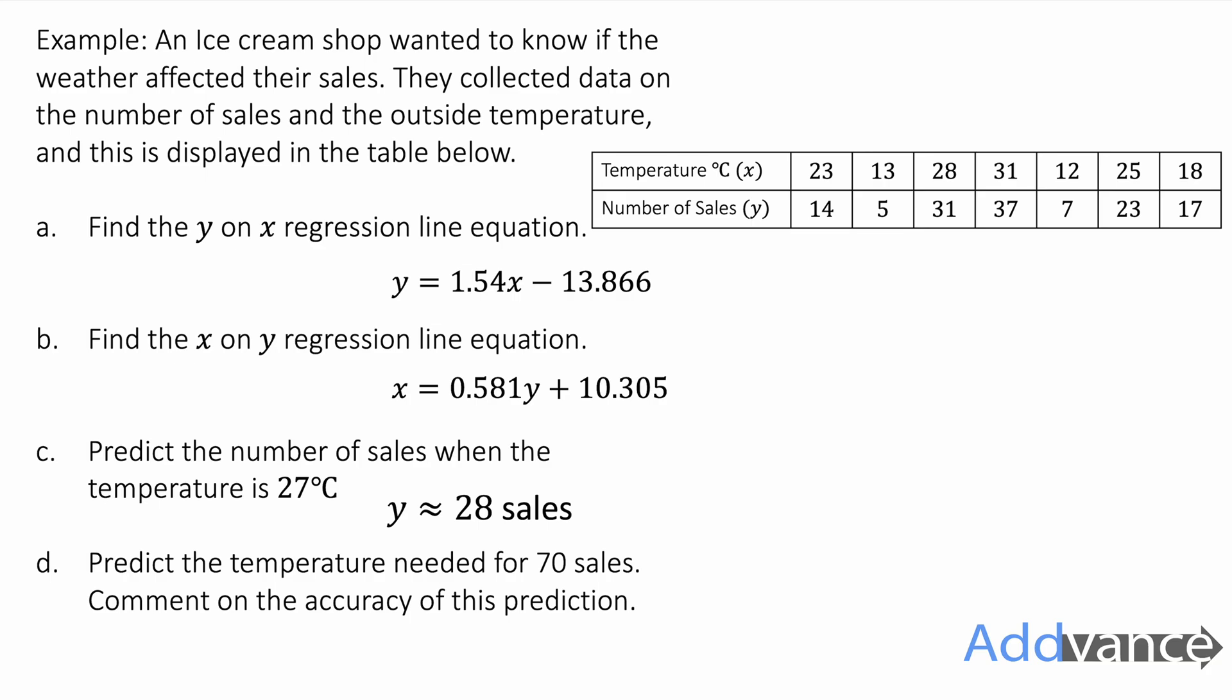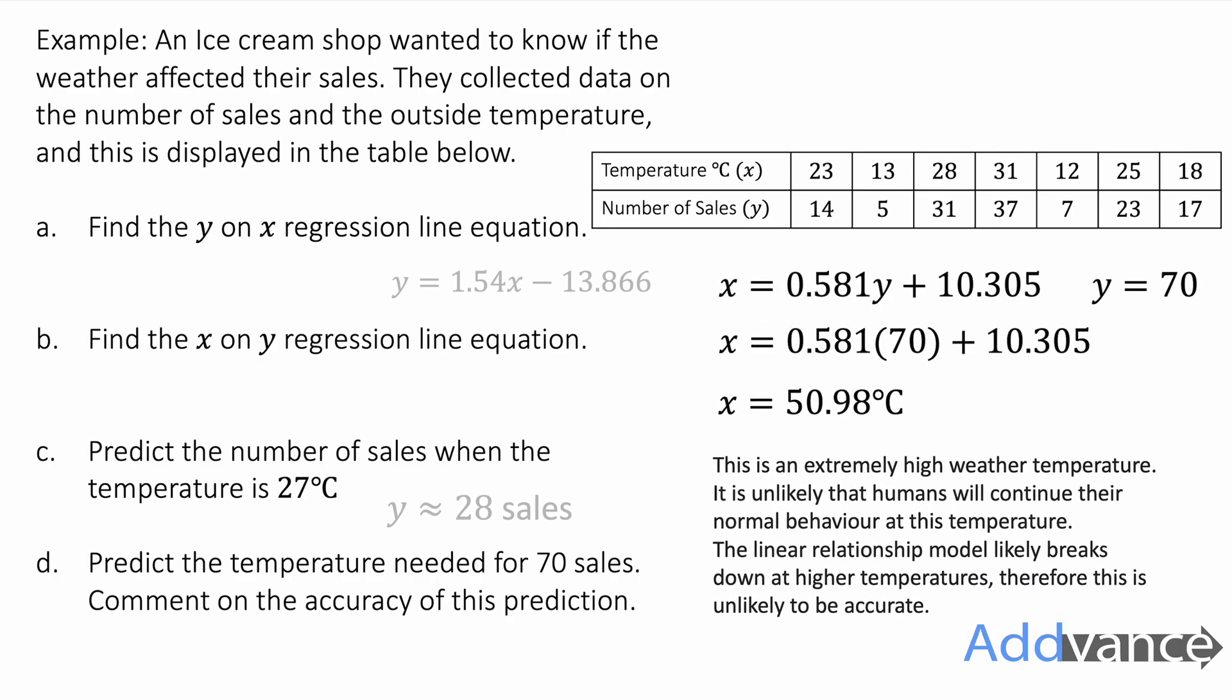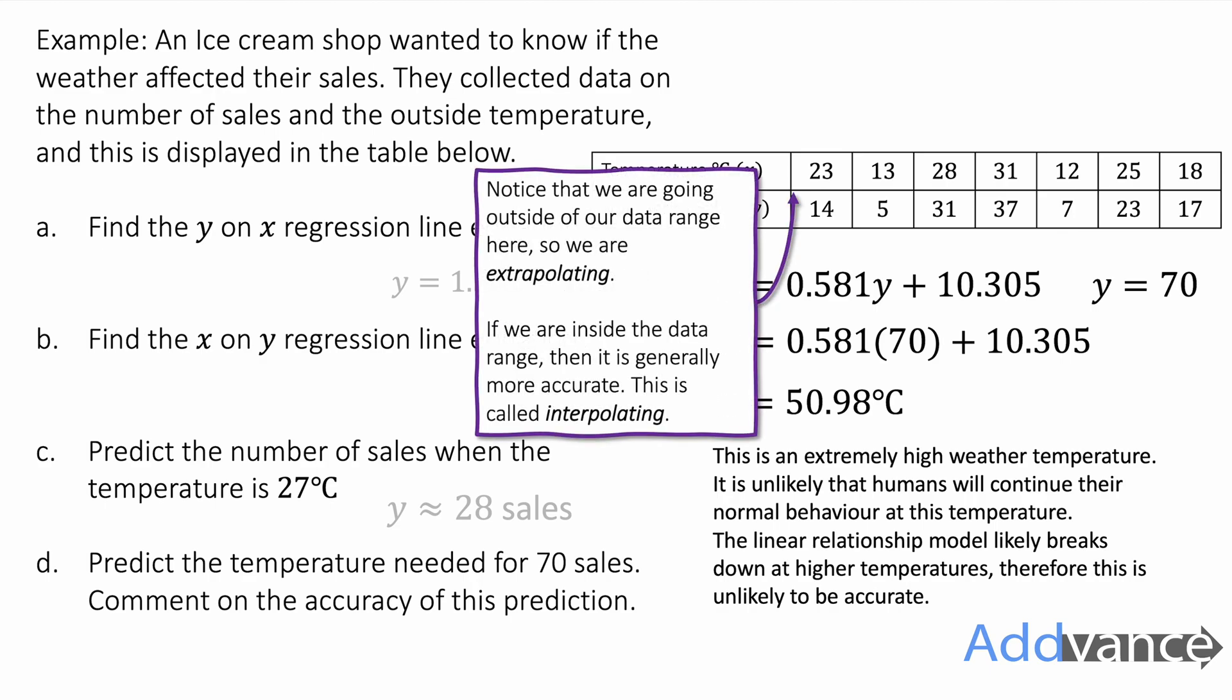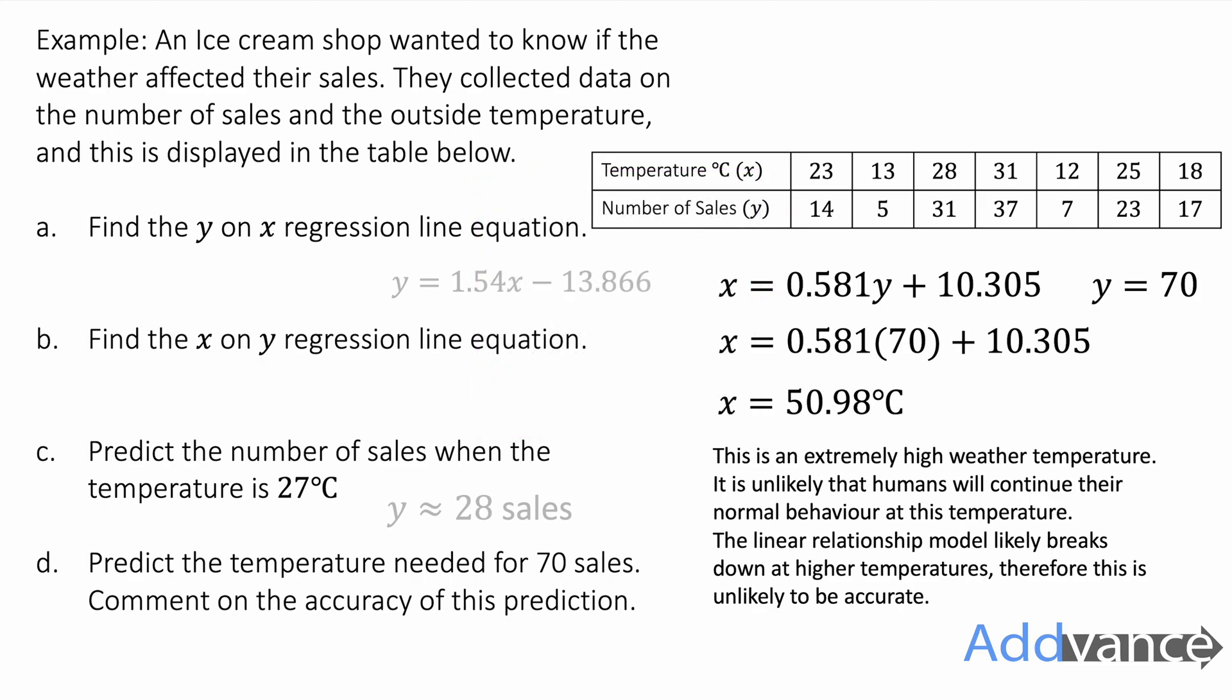Now predict the temperature needed for 70 sales. So this is going the other way. I'm going to use the other regression line here where the y value is 70. Substitute 70 in and we're tapping into the calculator. We get 50.98 degrees which is extremely high temperature here. So it's unlikely that our normal behavior will continue and therefore I imagine the linear relationship will not continue at those high temperatures.